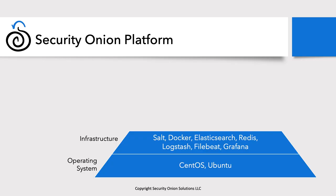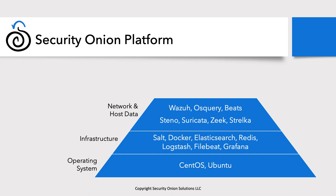On top of that infrastructure we have the applications that actually generate the network and host data. The first three — Wazuh, Osquery, and Beats — are our host tools. Wazuh, a fork of OSSEC, is our host intrusion detection system, allowing you to ship logs from endpoints and generate alerts. Osquery is another endpoint agent that focuses on allowing you to run queries against your endpoint, either live or scheduled, written in SQL syntax.